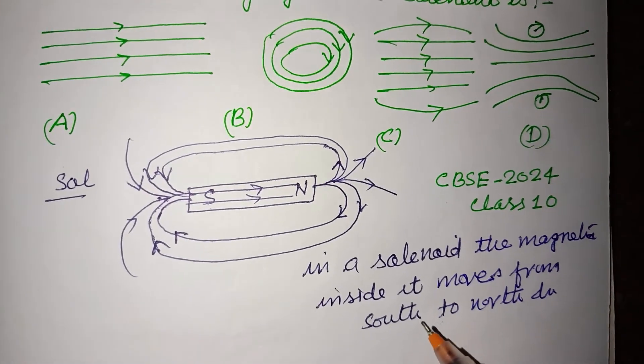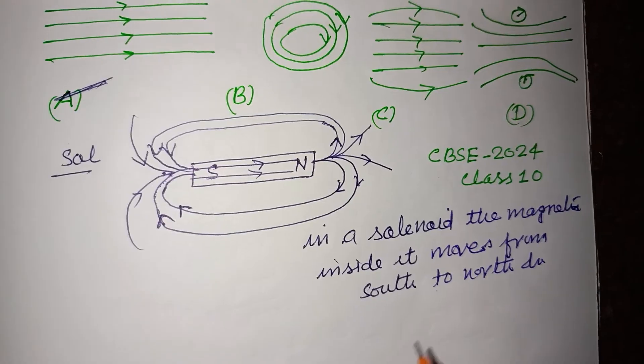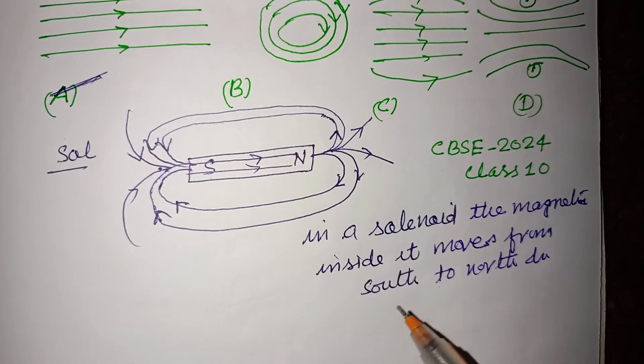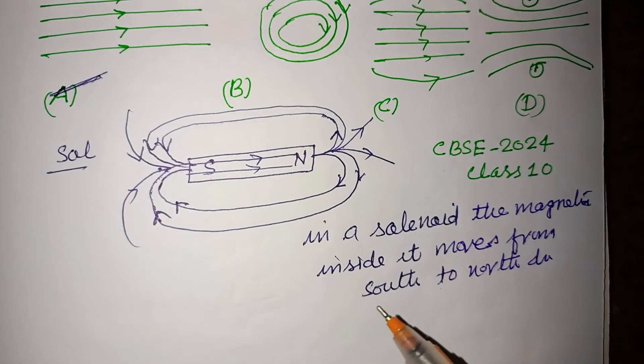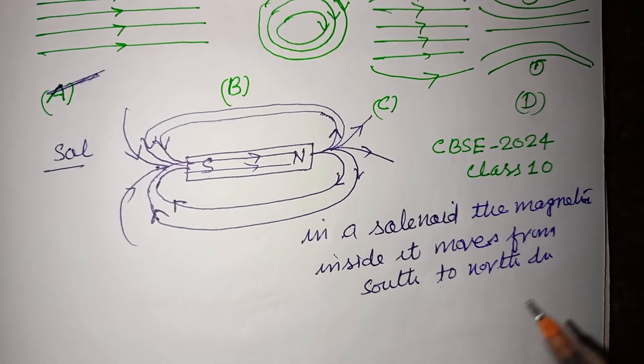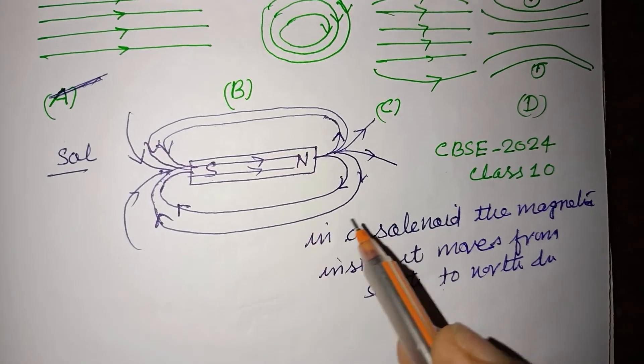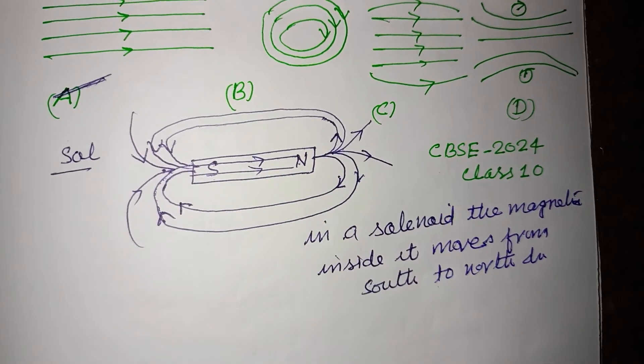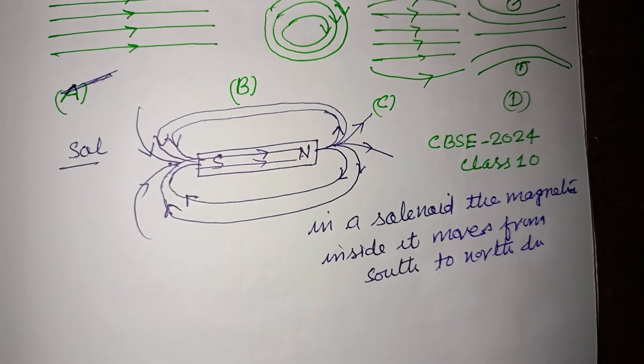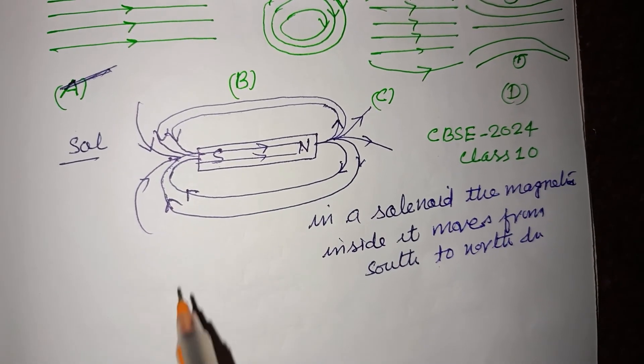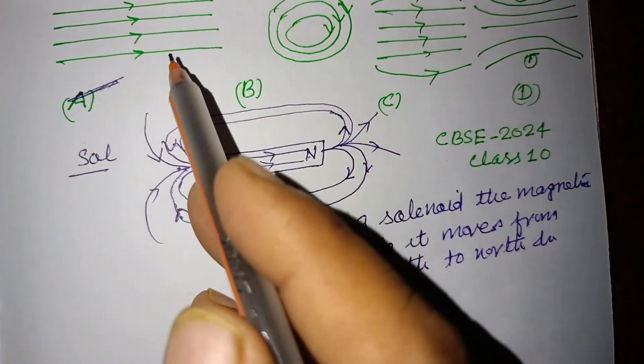So the correct graph is A, because a solenoid acts as a magnet when current flows in it. When it is suspended freely, it also resides in north-south direction. So it is equal to a magnet. Therefore, the magnetic field inside the solenoid is from south to north.